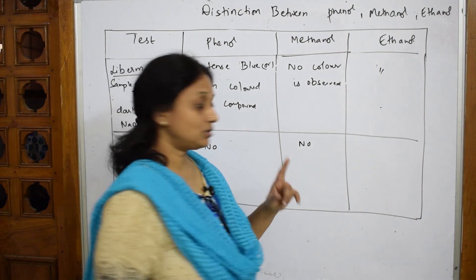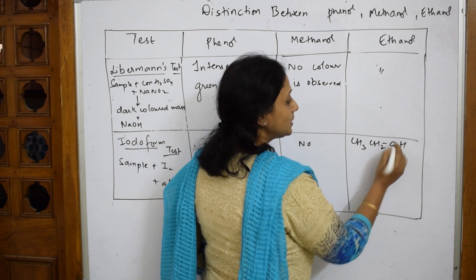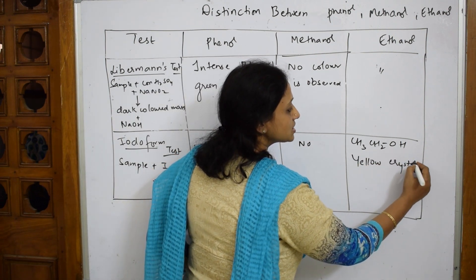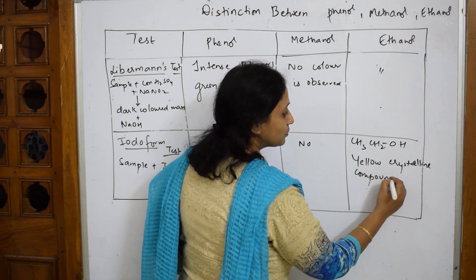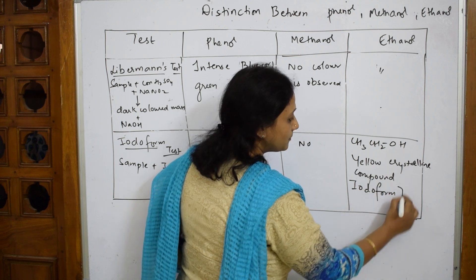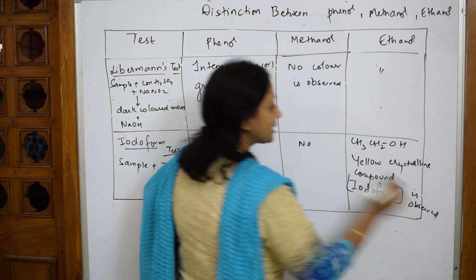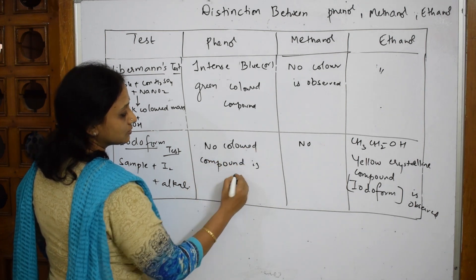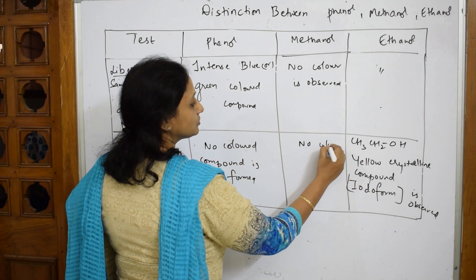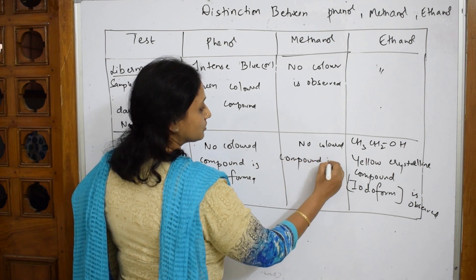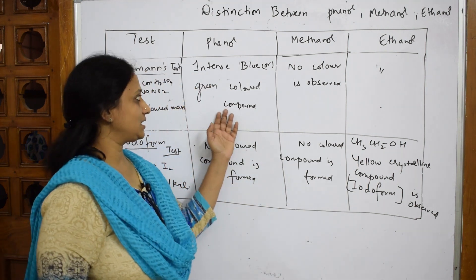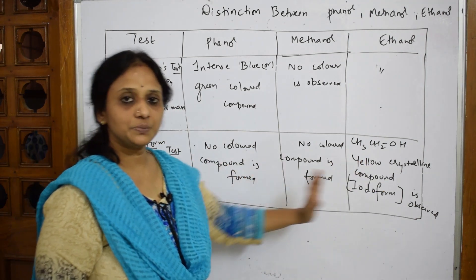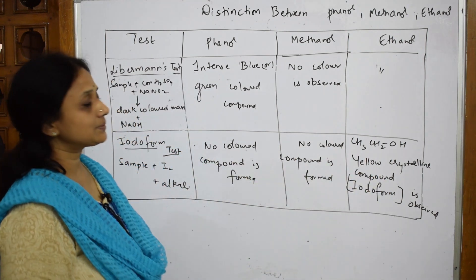For ethanol (CH₃CH₂OH), you have an oxygen group adjacent to a methyl group, so in the iodoform test a yellow crystalline compound is observed — this compound is called iodoform. Going back to phenol and methanol: write 'no colored compound is formed' or 'no precipitate observed.' Whenever you write a precipitate comparison, write 'no precipitate observed'; when comparing color, write 'no colored compound observed.'